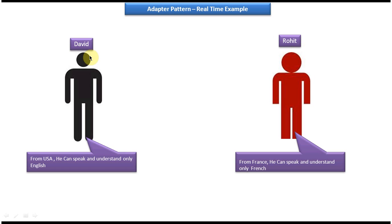Suppose this David wants to communicate with Rohit or Rohit wants to communicate with David, it is not possible. So how to solve this issue?